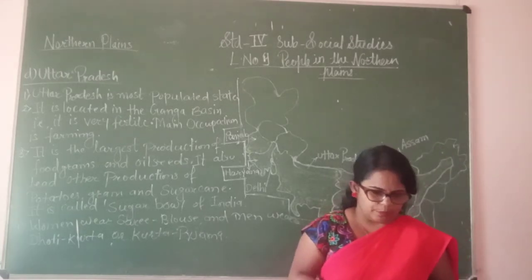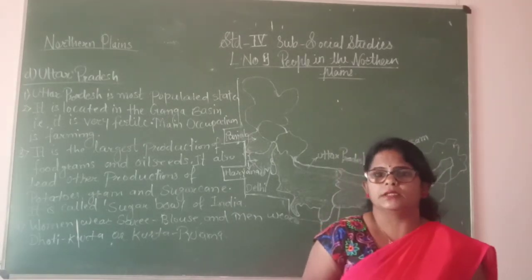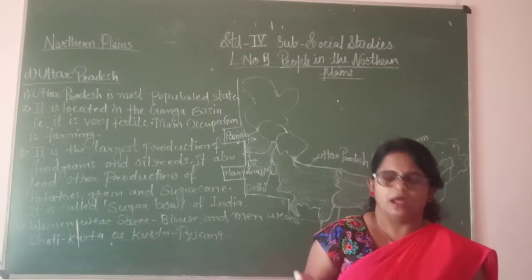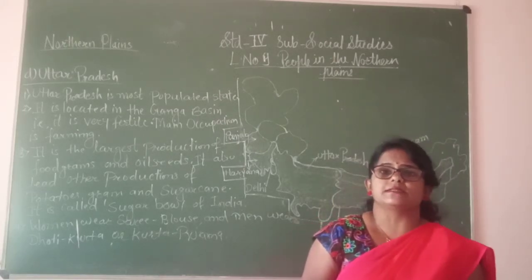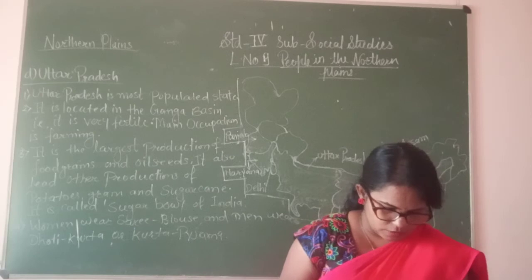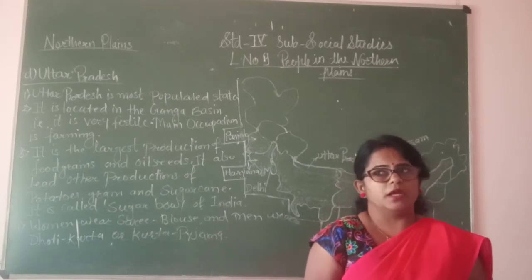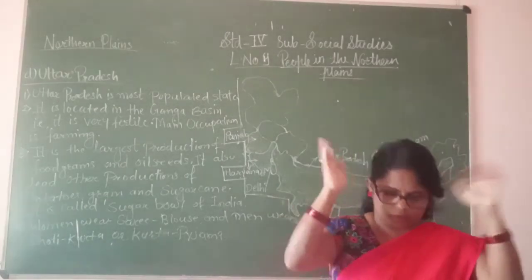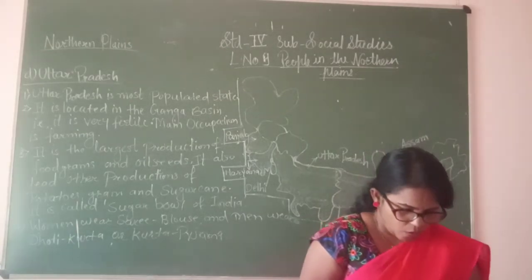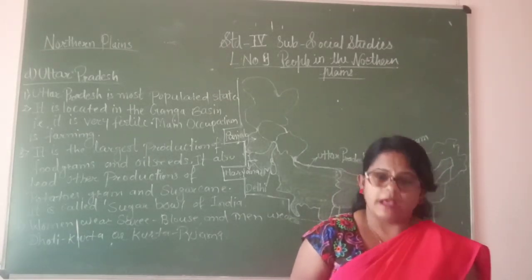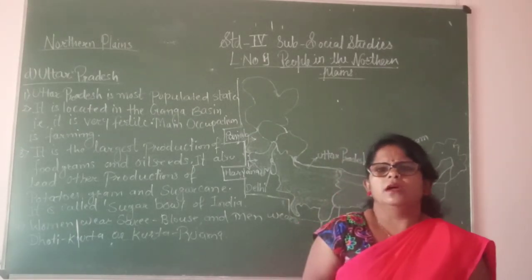Prayagraj, also known as Allahabad, and Mathura are famous religious places. Kumbh Mela is held at Prayagraj every 12 years, making it a very important religious gathering.